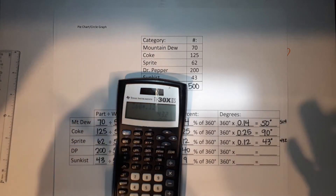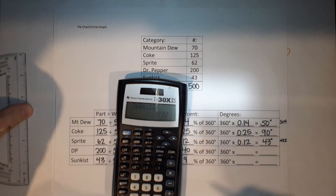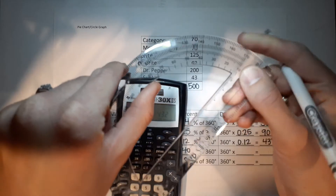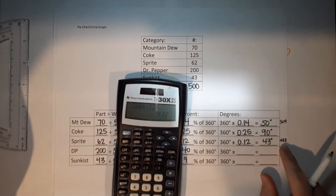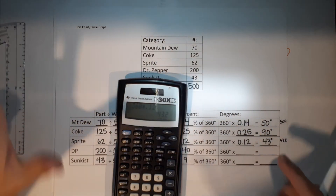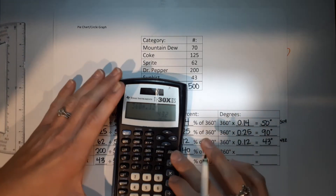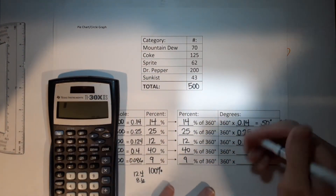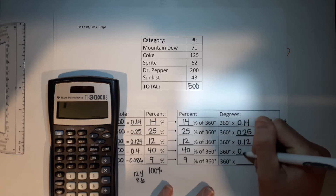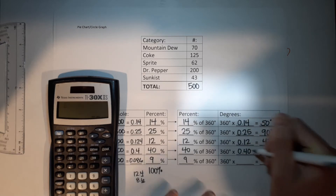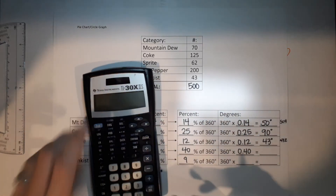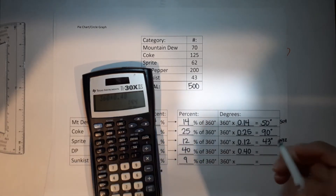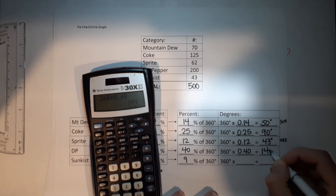Since it's a circle chart, tiny fractions of a degree are basically impossible to draw, which is why we're rounding. Dr Pepper: 40% of 360. Multiply 360 by 0.4, which gives 144 degrees.